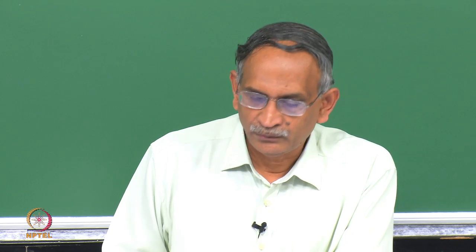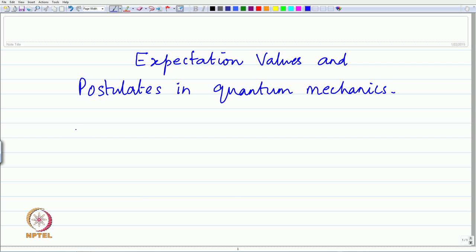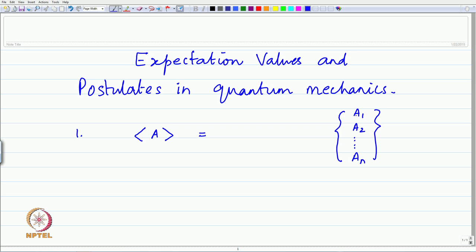The postulates are mathematical in nature, but we will see simple explanations. First: the expectation value. It is denoted by angle brackets for any quantity. The average value is calculated according to the standard prescription: if there are n measurements with different outcomes for the measured quantity a, with values a1, a2, ... an, then the average is the sum over i from 1 to n of a_i, divided by n.